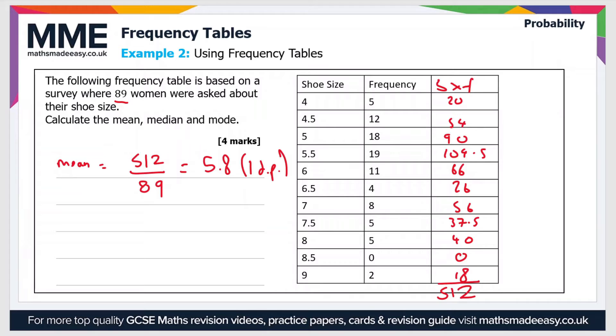The median and mode are a bit more straightforward. The median value is given by the n+1 over 2 value. So that's 89+1 over 2. That's 90 divided by 2, which is 45. So the median is the 45th value.